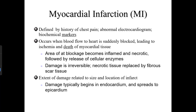Heart muscle cells slip into the G0 phase of the cell cycle and cannot reproduce. Once they die, they are repaired as fibrous connective tissue — scar tissue that serves as dead weight on the heart. A small amount of scar tissue may have minimal impact, but a major heart attack leaves a large area of scar tissue. Even after surviving a heart attack and improving lifestyle, the weakened scar tissue can rupture, causing internal bleeding and sudden death.